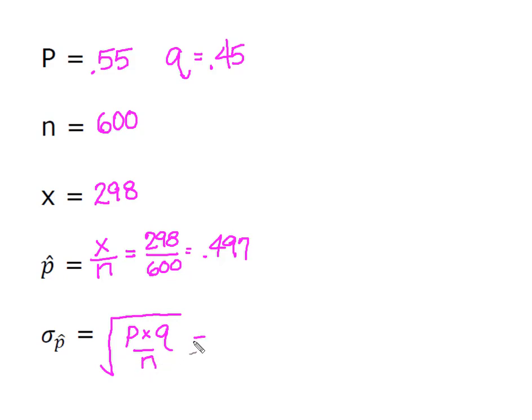So in this case, it's going to be 0.55 times 0.45. Then, after you've multiplied it, divide by 600. And once you get that, take the square root of the whole thing, and it's going to give you a standard error of the proportion of 0.0203.